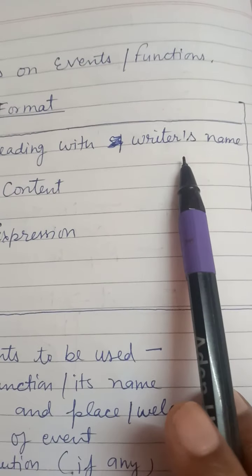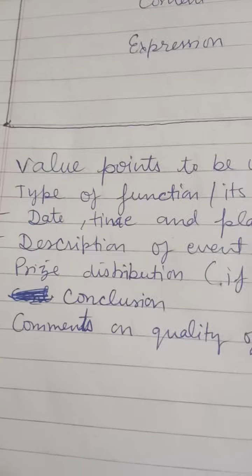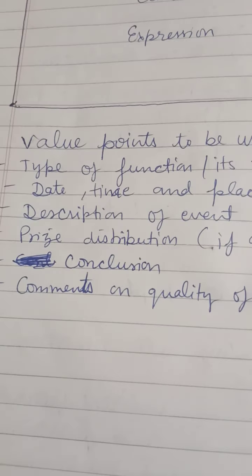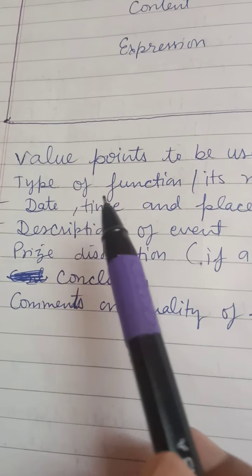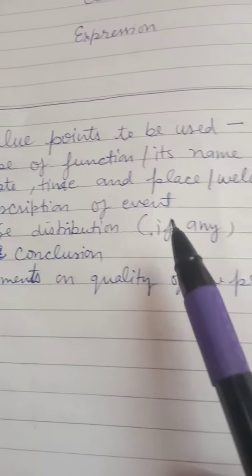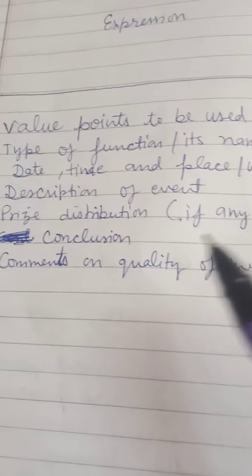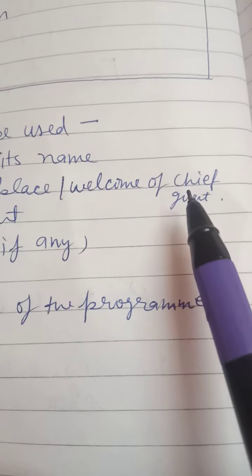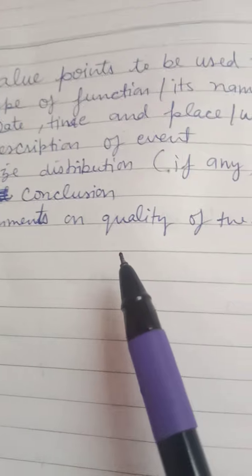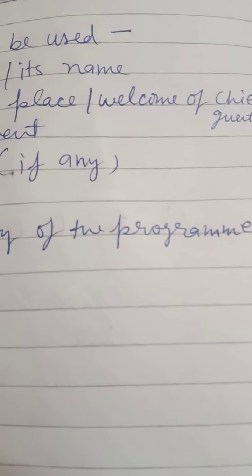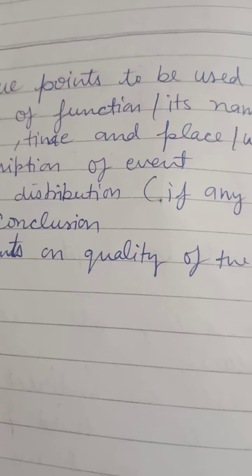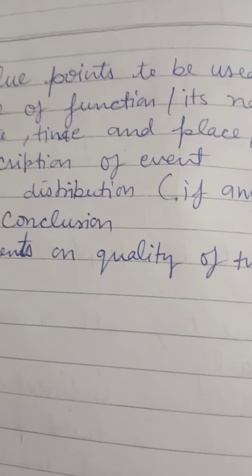For reports on events and functions, the format is the same but slightly different — heading should be there with the writer's name, content, and expression. The date and place can be written within the content. You can write about the function, the date, time, and place, including the description of the event. If any chief guest is present, write about that. If there is any prize distribution, include that too. Finally, comment on the quality of the program.